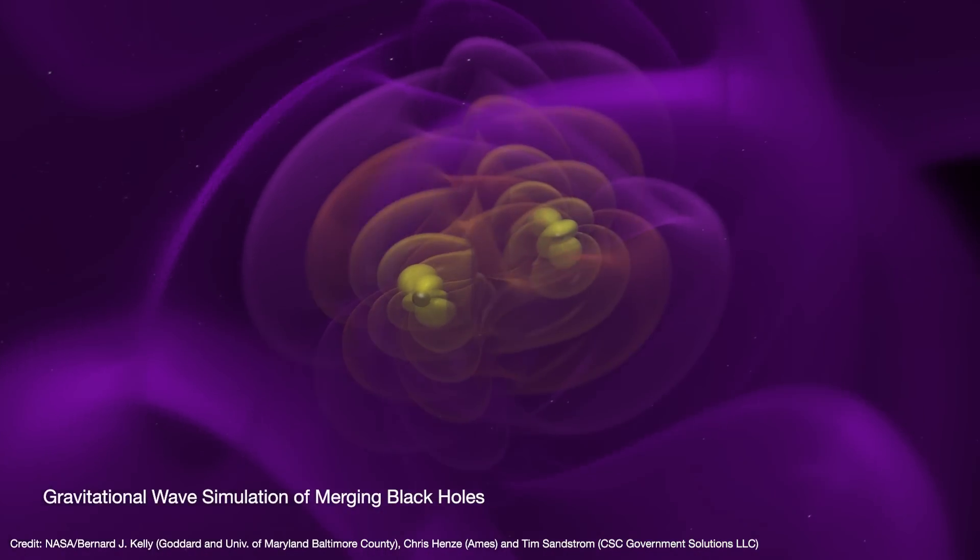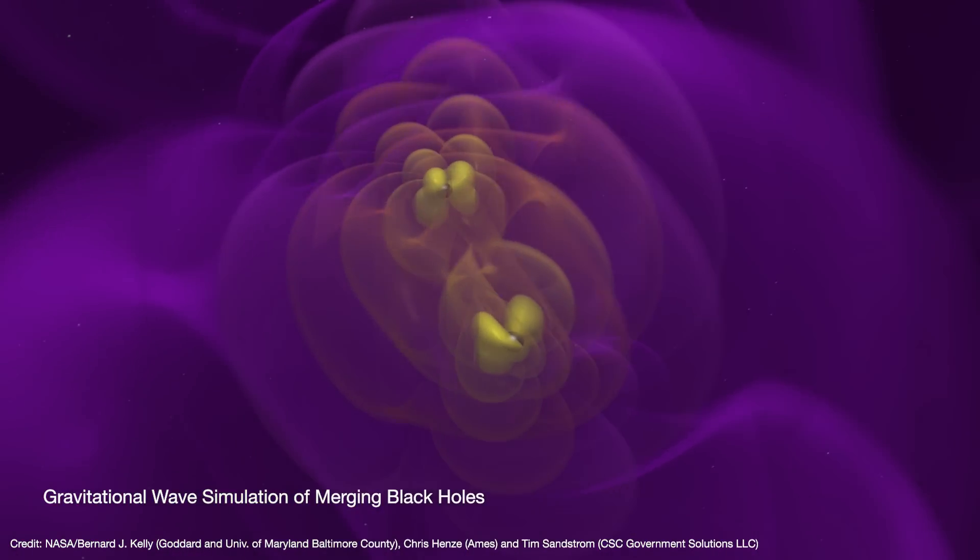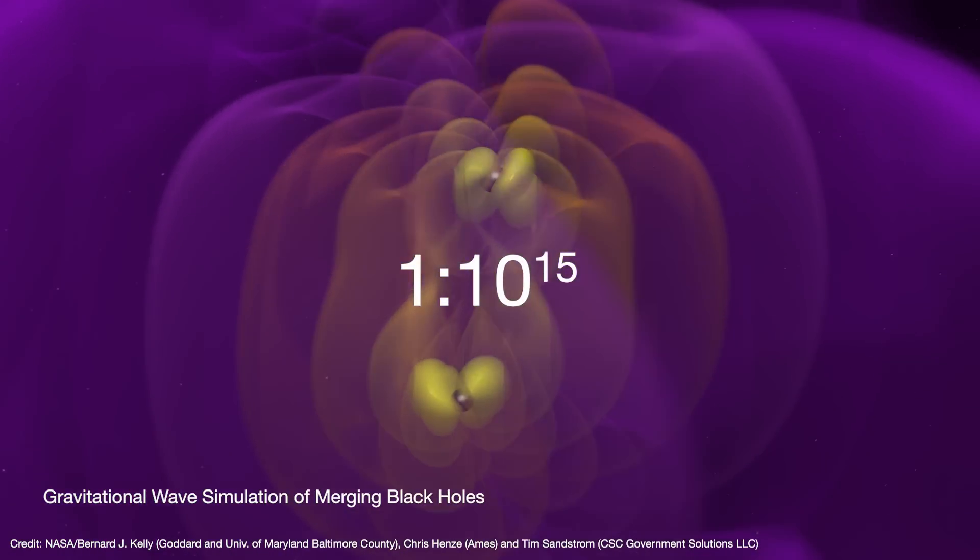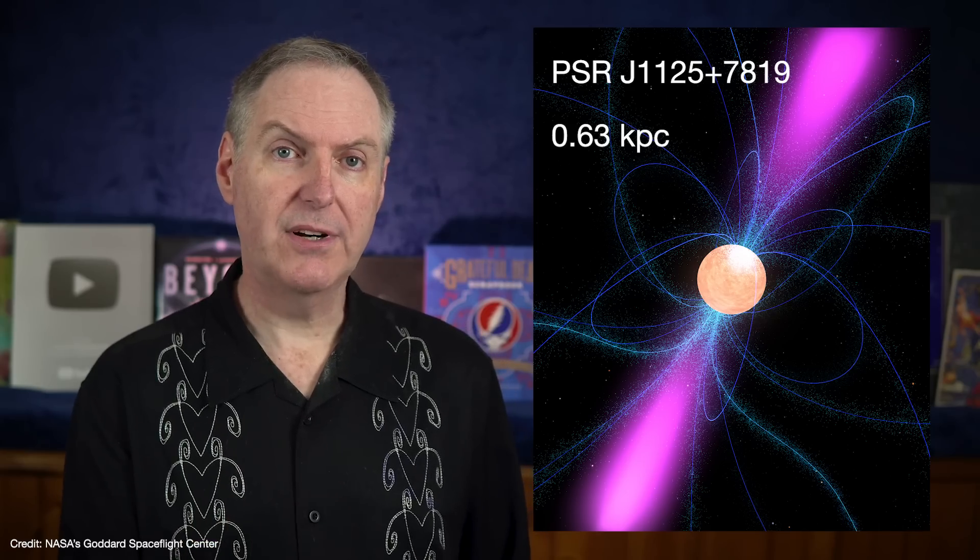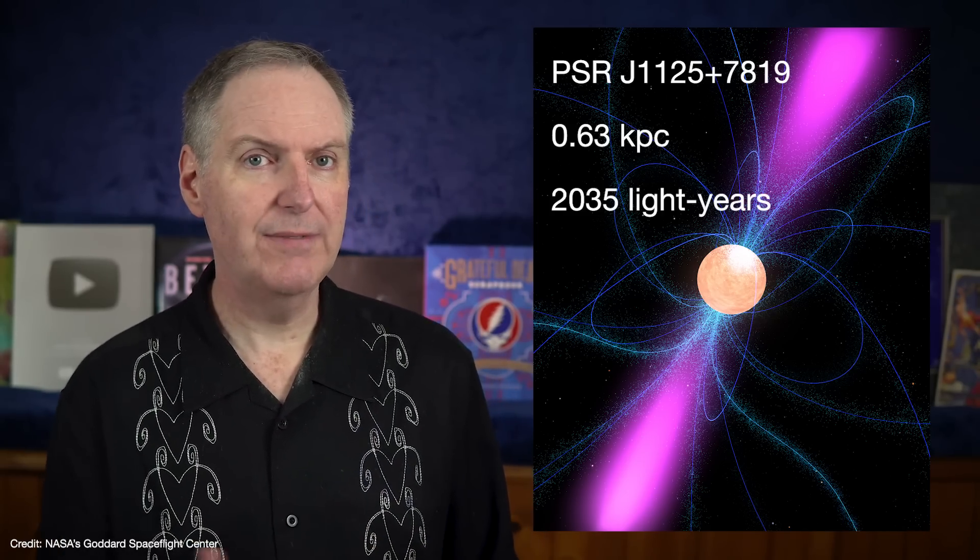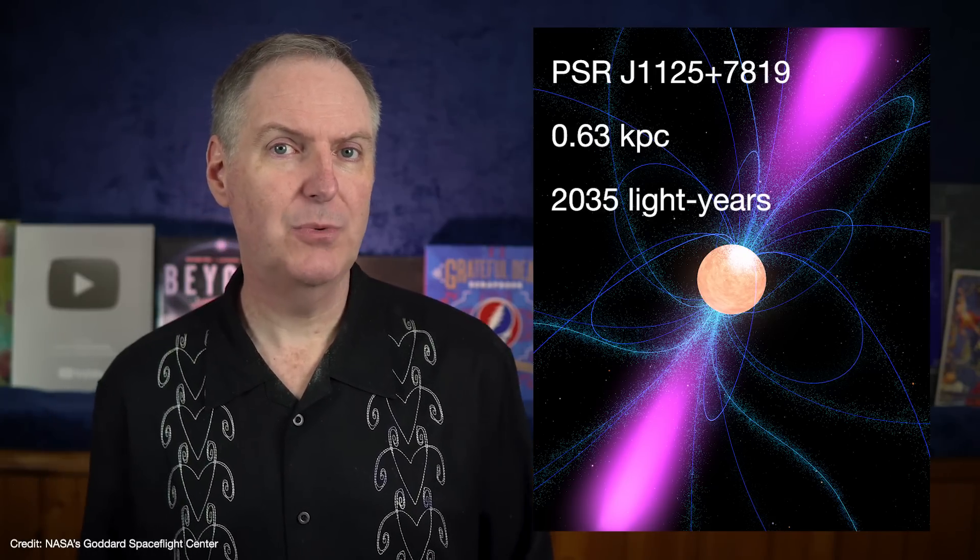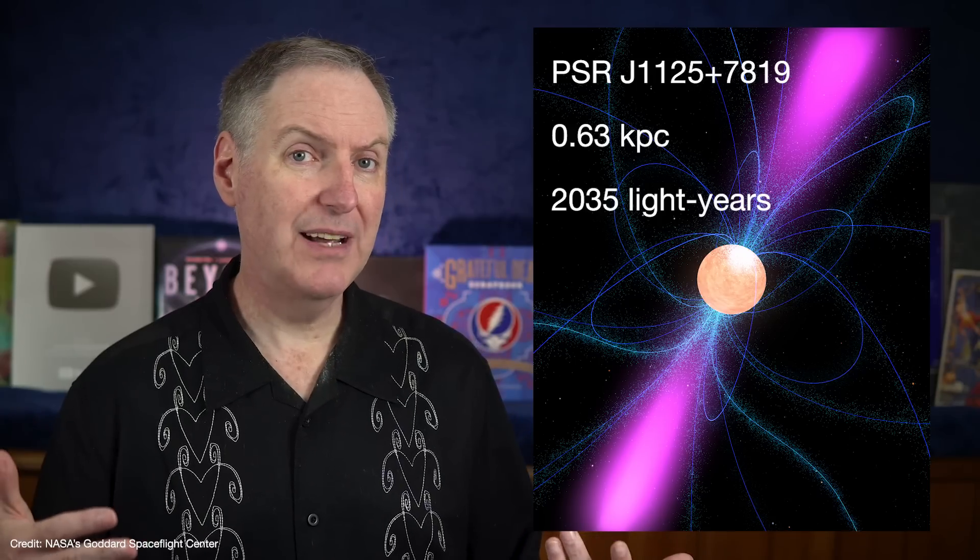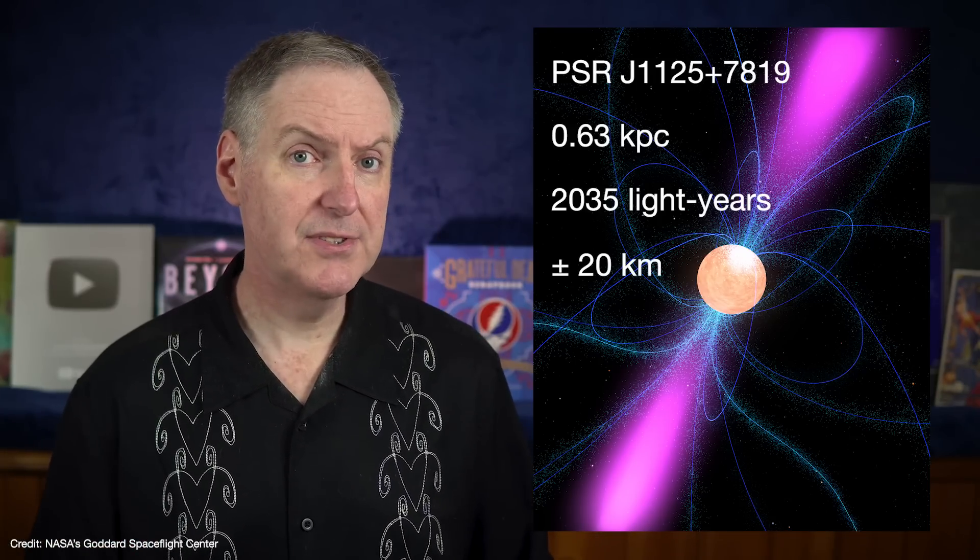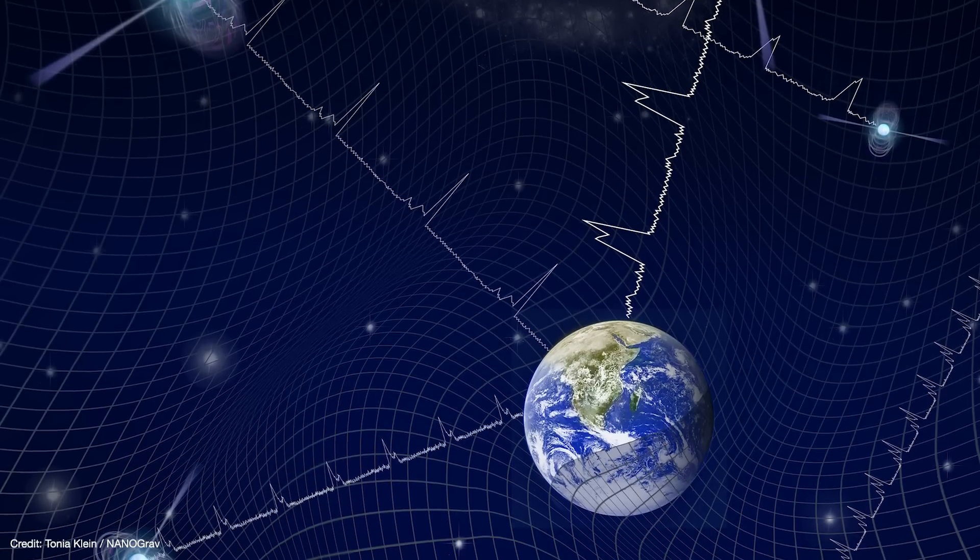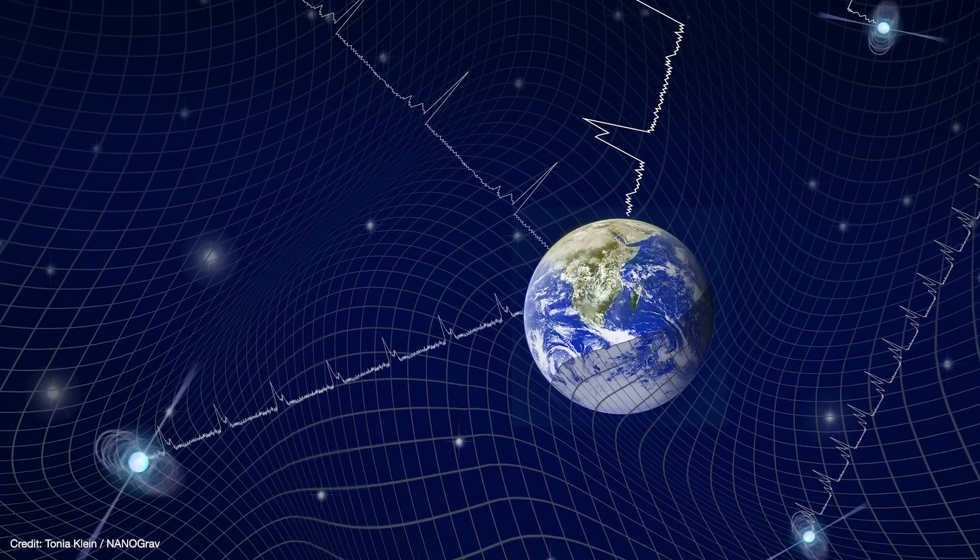But even then, you wouldn't detect very much. The gravitational wave from a supermassive black hole binary might move spacetime by one part in 10 to the 15. To put that into perspective, one of the closest pulsars in the study is 0.63 kiloparsecs, or 2,035 light years away. But a gravitational wave from supermassive black holes might move the pulsar back and forth by just 20 kilometers. So we need to detect a difference of just 20 kilometers across 2,000 light years of space over a multi-year period.